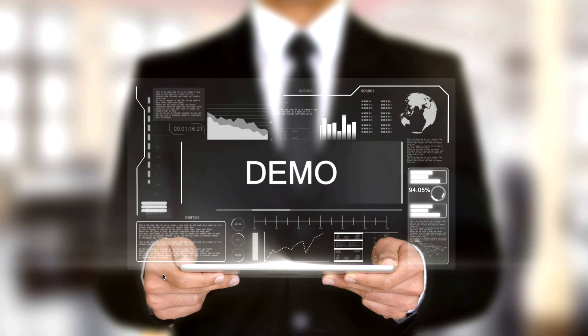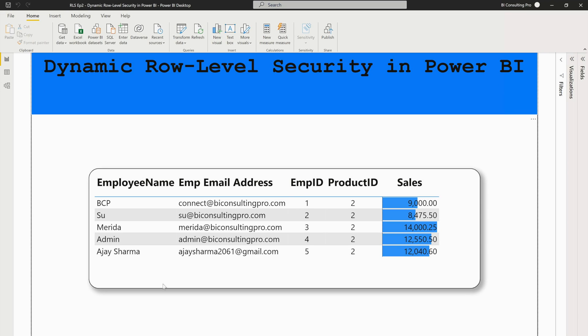Now we are going to start today's demo. I'm going to show you with a very simple example how you can maintain it. Remember, more complex scenarios can also be implemented depending on your requirements. As you can see, we are implementing dynamic role level security in Power BI. I have this simple data in our table — employee name, email addresses, employee ID, product ID, and sales. Since sales is financial data, we don't want to show it to everyone, so each user has their own access.